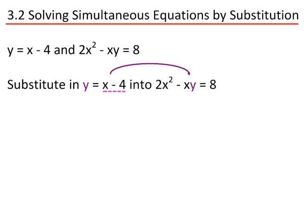We're going to substitute in y, which is equal to x minus 4, into 2x squared minus xy equals 8. This will give us 2x squared minus x brackets x minus 4 equals 8.